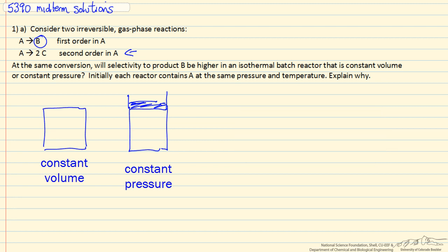To favor B, to have selectivity towards B, we want low concentration of A. The lower the concentration of A,